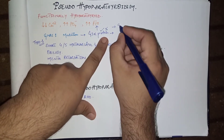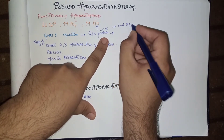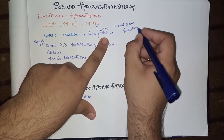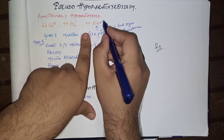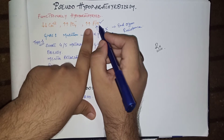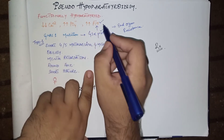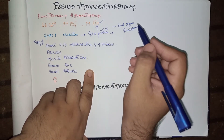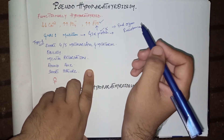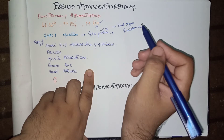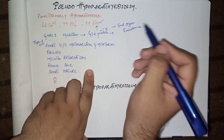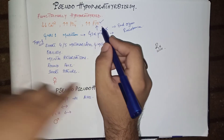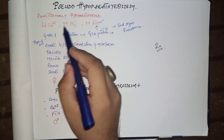The problem is end organ resistance — parathyroid hormone levels are very high in the blood, but these parathyroid hormone levels cannot perform their function well on the kidneys and on the bone. This is similar to type 2 diabetes mellitus, where patients have insulin resistance; here, parathyroid hormone resistance is present.